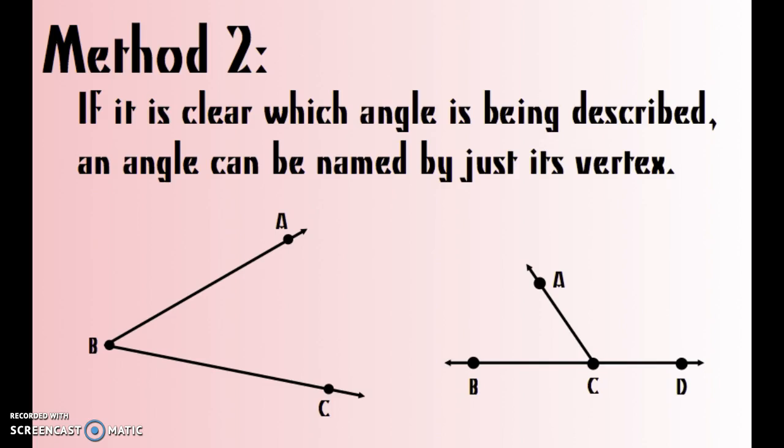A second method that sometimes makes it a little simpler is if it's clear which angle is being described, you can just name the angle by its vertex, so just that point in the middle where the two rays meet.